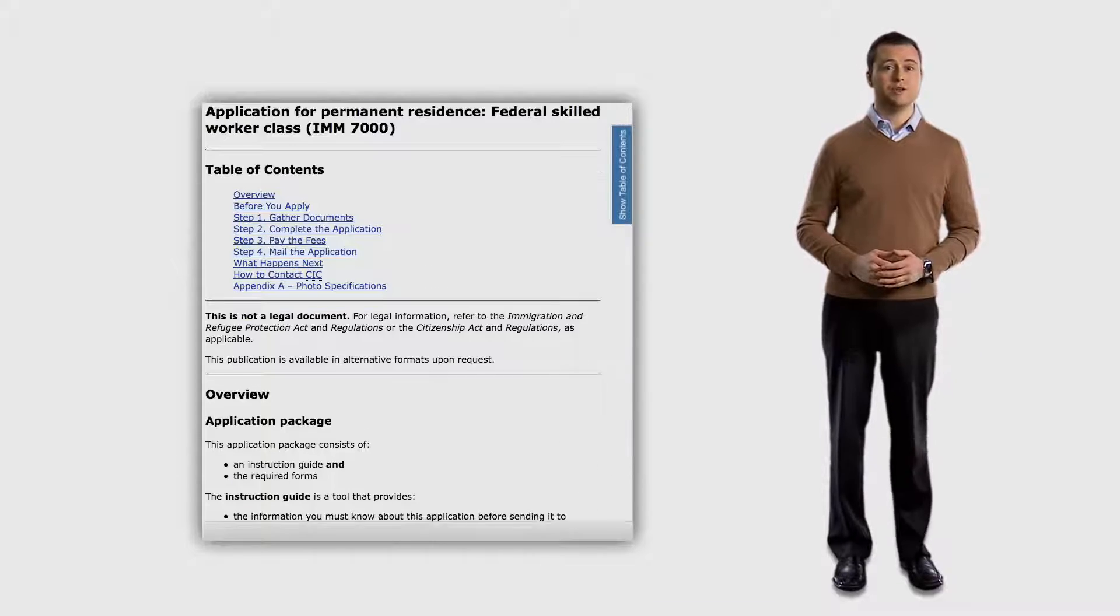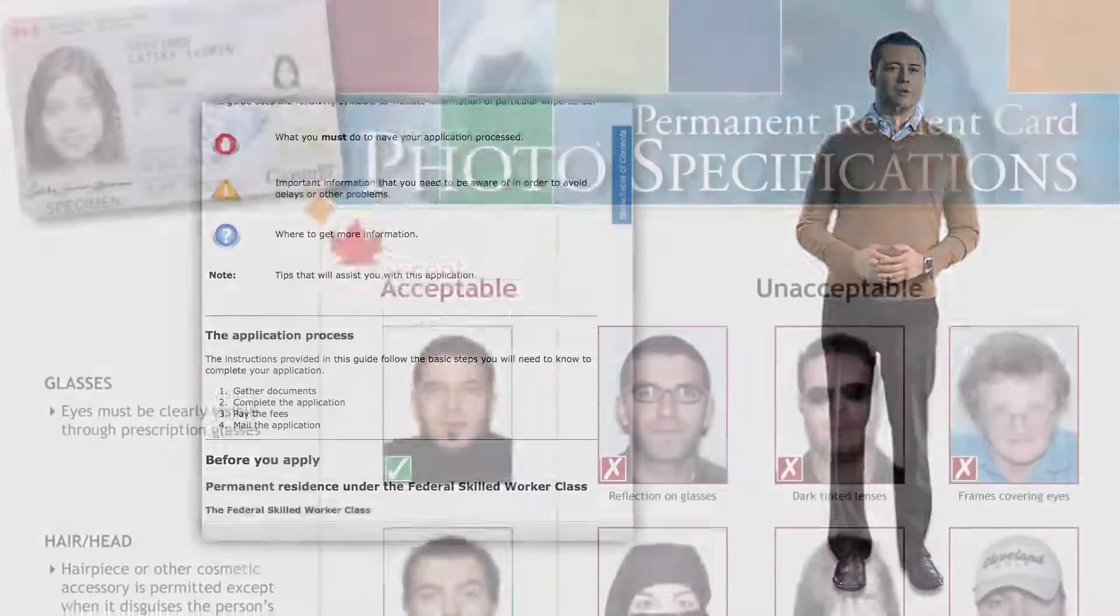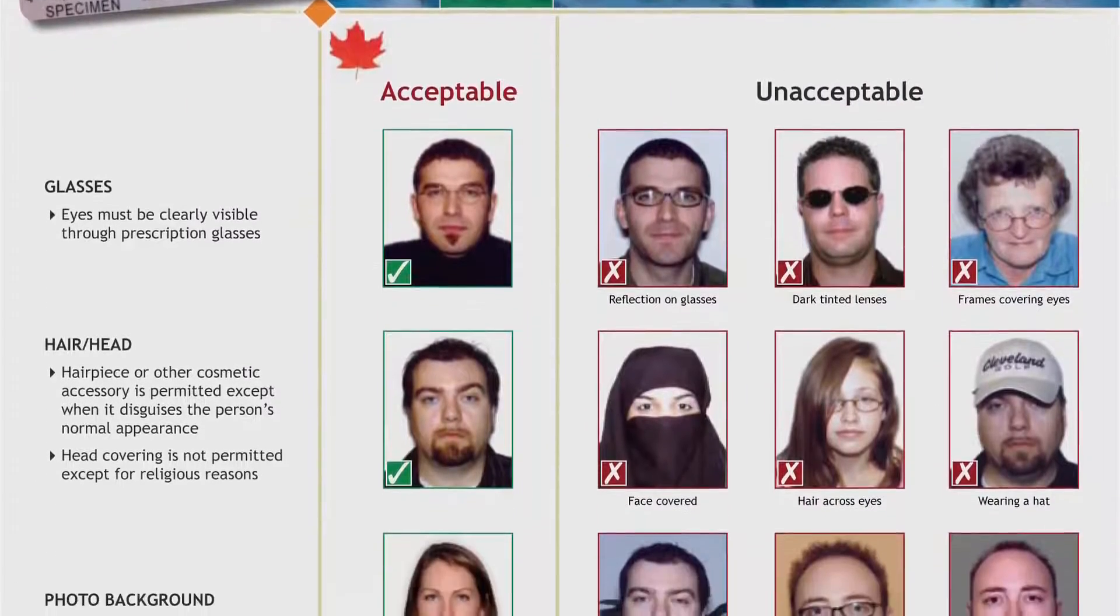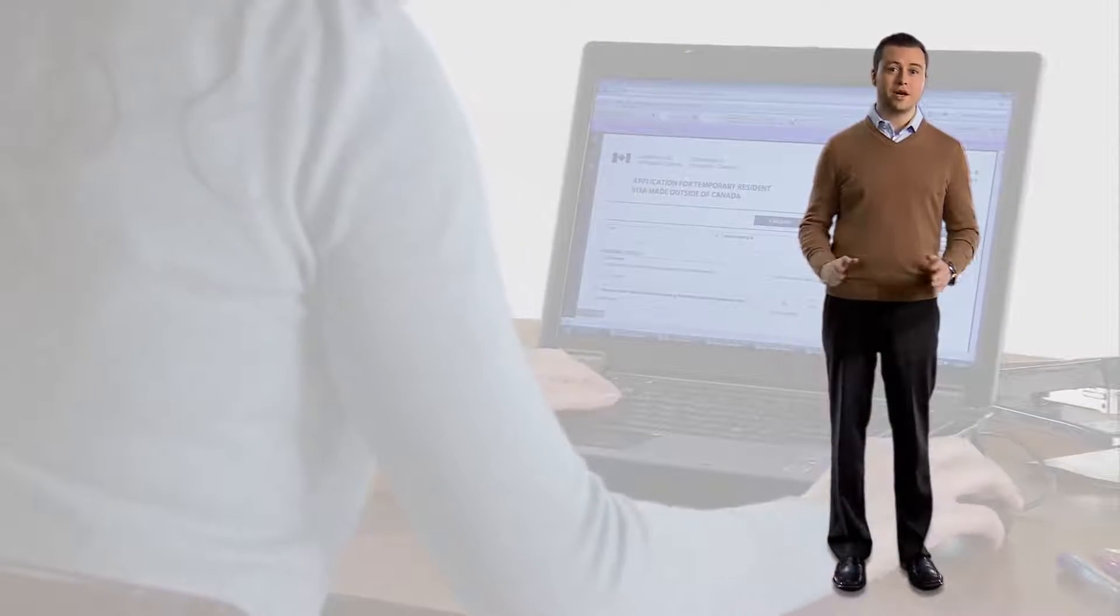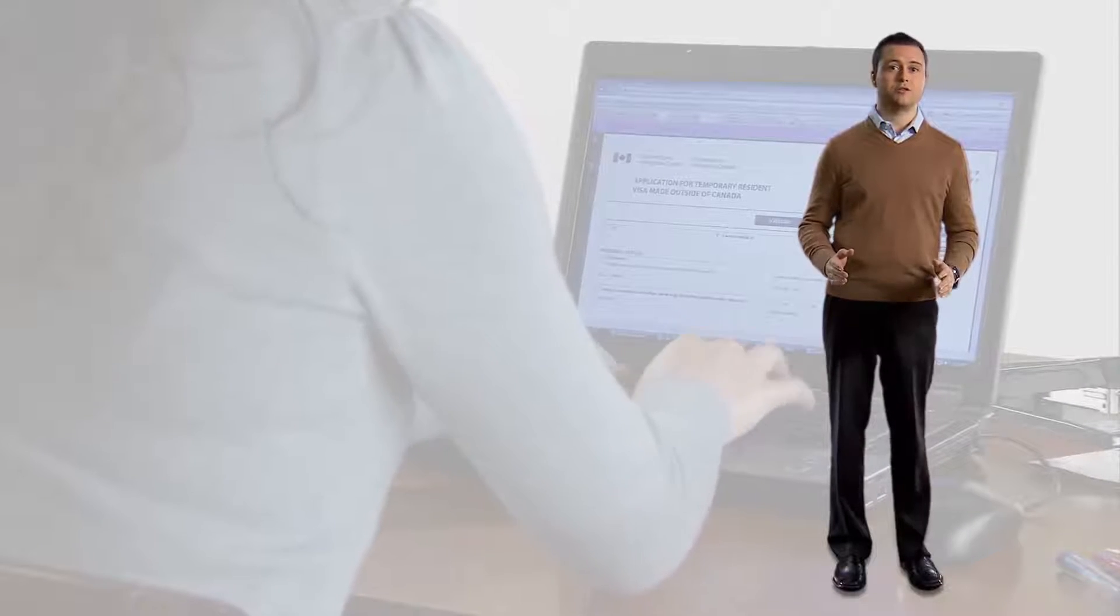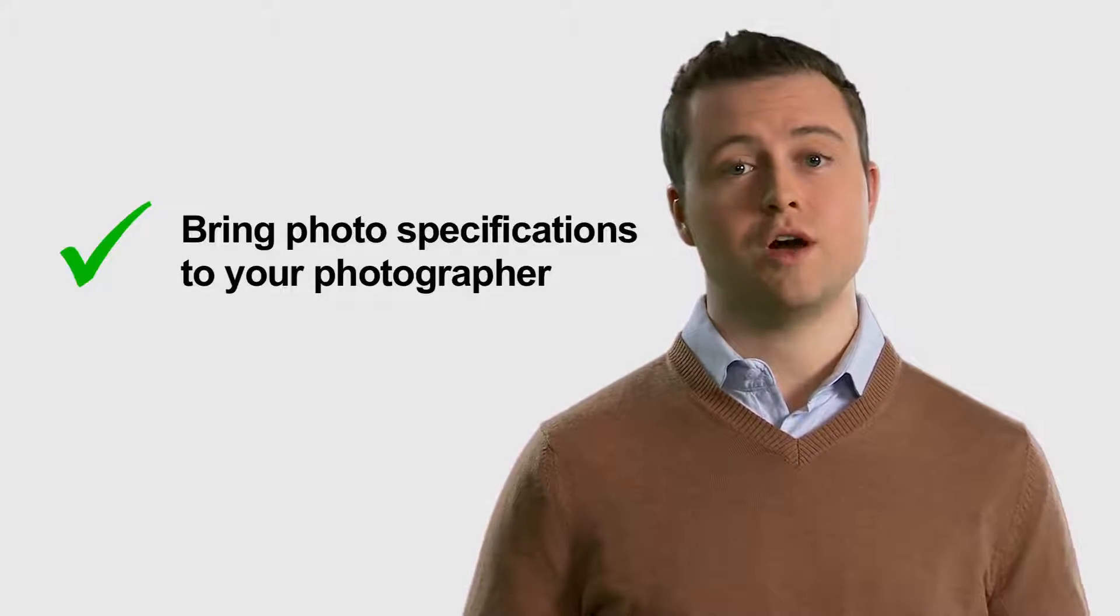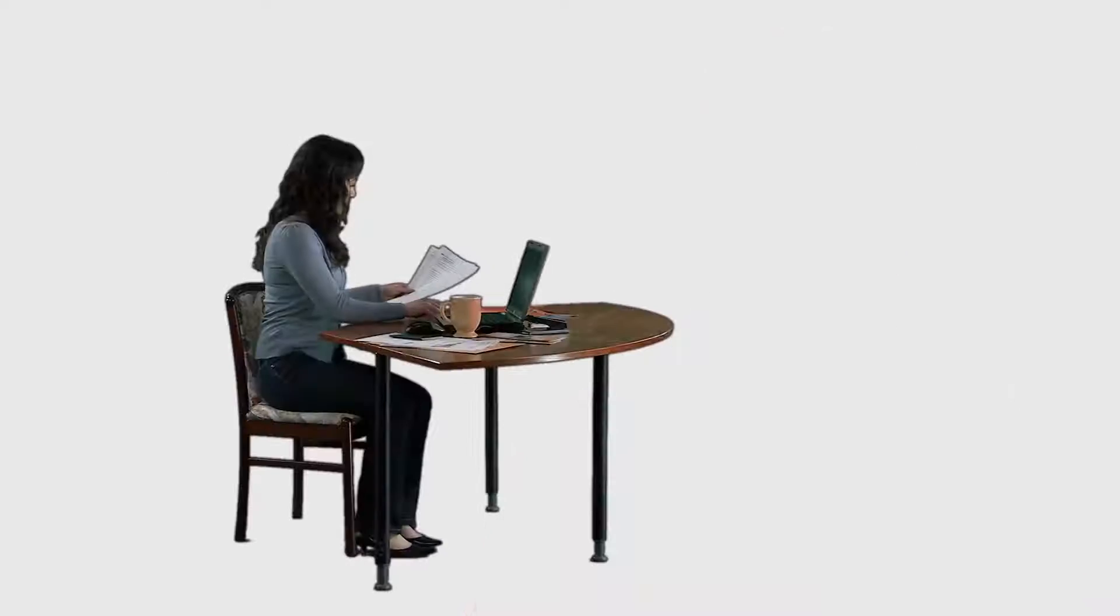Another common problem area is photos. We have very specific photo requirements and these are clearly outlined in each application kit. They are sometimes different for different applications. We often receive photos that do not meet our specifications. Sometimes they are damaged or they are not clear, too dark or have shadows. Unfortunately, we have to return the entire application to you and ask to send new photos when you resubmit your application. Your best approach is to bring the photo specifications in your application package to your photographer. Check the photos when you receive them to make sure that they meet our needs.